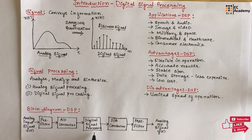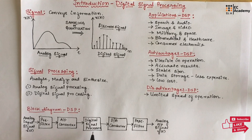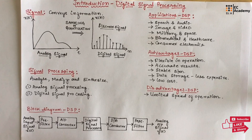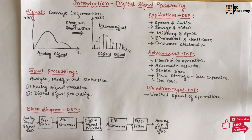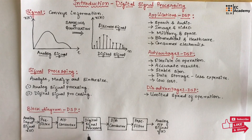Next is the digital signal processor, which is the heart of the system. All the signal processing work is done in this unit. Nowadays, CMOS or ULSI chips are used to make the DSP. These processing units have high speed, high data throughputs, and dedicated instruction sets which are helpful in processing the signal.